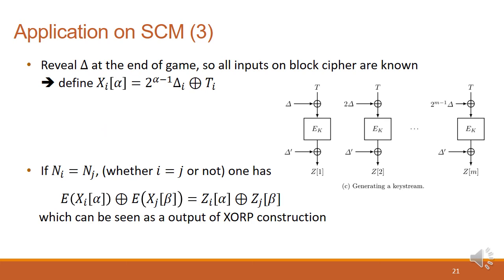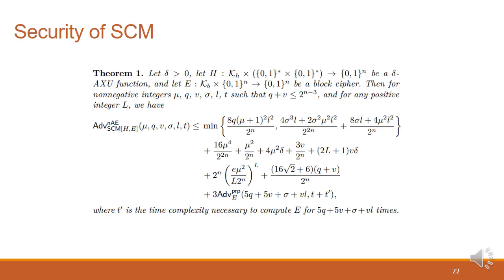The final step is keystream generation. Similar to before, we reveal the delta at the end of the game, so all inputs on block ciphers are known. Then, one can compute the difference between two block cipher outputs, who share the same nonces. Therefore, we can use the randomness of XORP outputs on this construction, so we can conclude that Z variables or keystreams are all generated in random. Together with the expectation method, we could get this error, which gives security bound of SCM.